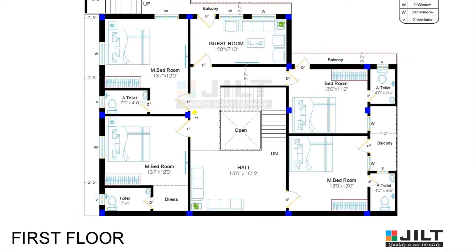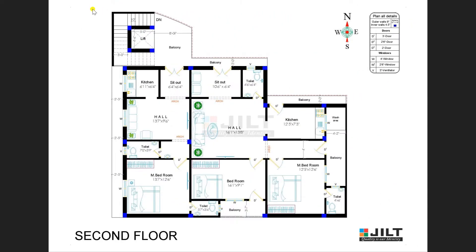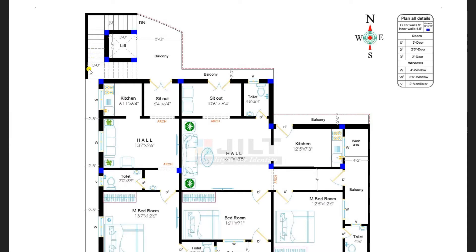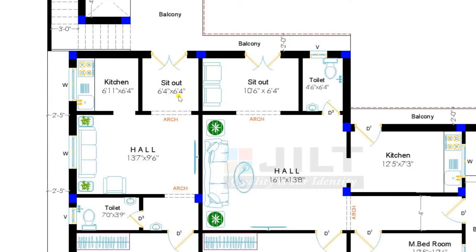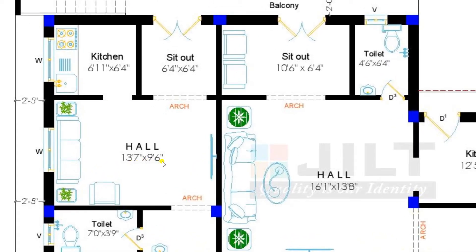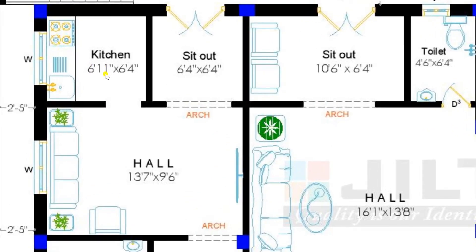This is the first floor plan. Now moving towards the second floor. We can enter through the north direction steps. Here we have designed two portions. The entrance of one portion has a sitout of 6 feet 4 inches by 6 feet 4 inches, and from the arch we have provided an appearance of hood. Entering to the hall of dimension 13 feet 7 inches by 9 feet 6 inches, with a sofa set along with LCD. From hall entering to the kitchen of dimension 6 feet 11 inches by 6 feet 4 inches, with a platform, gas stove, and wash basin.